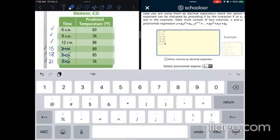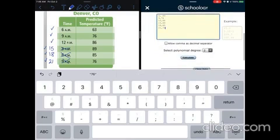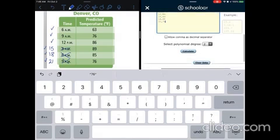Let's see. So I got them all. So this one here says select the degree of the polynomial. A 2 is good because it's x squared. You do not want to allow comma because then it's going to think it's a decimal or something. So you're going to hit calculate.